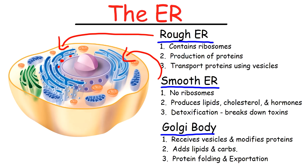The rough ER assists in the production of proteins because ribosomes make proteins. Because the smooth ER doesn't have any ribosomes, it does not make any proteins. However, it does produce lipids, cholesterol, and hormones. It also assists in detoxification — it breaks down toxins by making molecules more water-soluble so that they can be easily removed from the body or excreted through the urine.